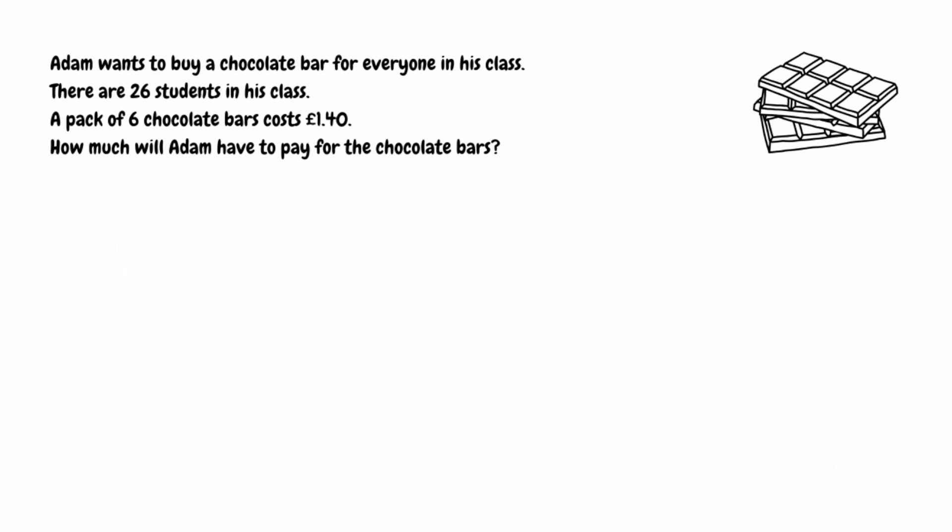For this first question, Adam wants to buy a chocolate bar for everyone in his class. There are 26 students in his class, and a pack of six chocolate bars costs £1.40. How much will Adam have to pay for the chocolate bars? To begin with, we need to figure out how many packs Adam needs to buy — he needs 26 chocolate bars, and there are six per pack, so we start by doing 26 divided by 6.